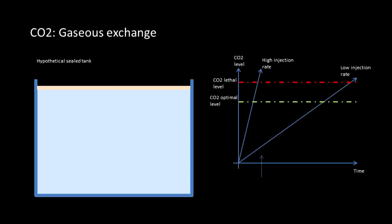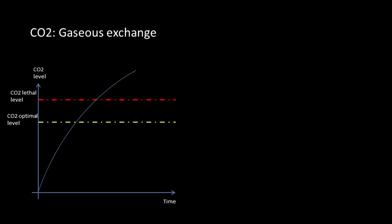In reality, all tanks are exposed to the atmosphere and gaseous exchange occurs. This means that CO2 levels rise at a diminishing rate. As the concentration of CO2 in the water rises, the faster it dissipates into the atmosphere. Even if we keep injecting CO2, the CO2 level will reach a peak equilibrium where the amount of CO2 injection equals the amount that is off-gassed.